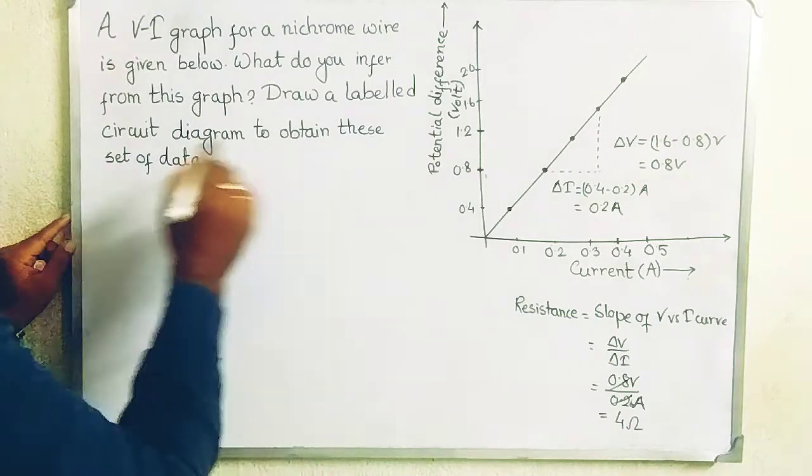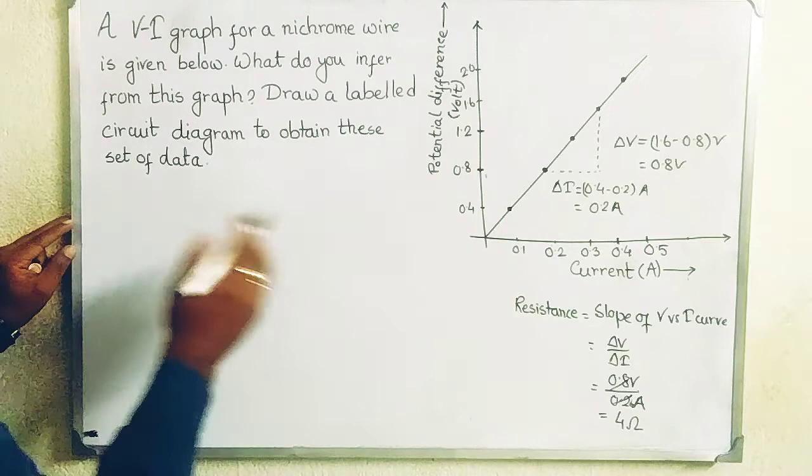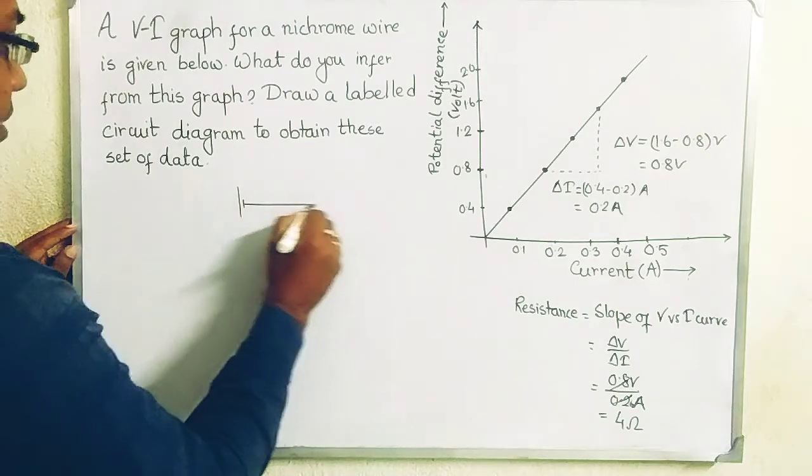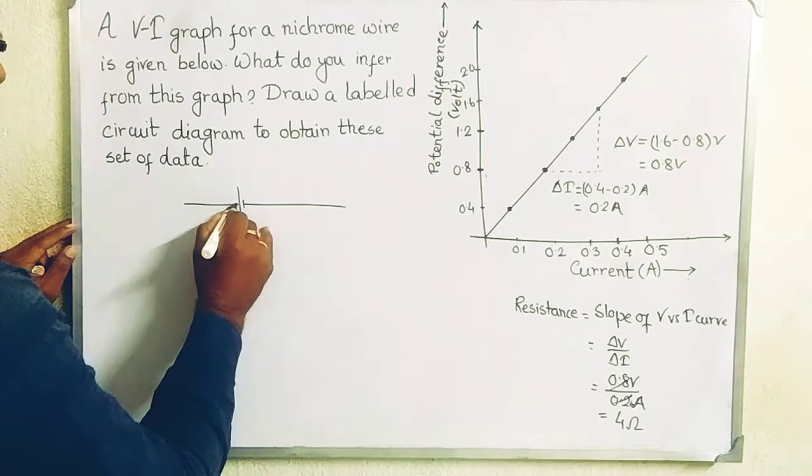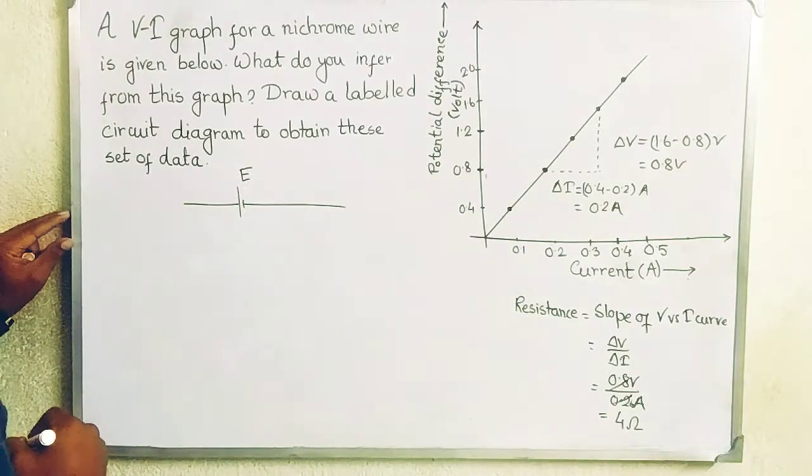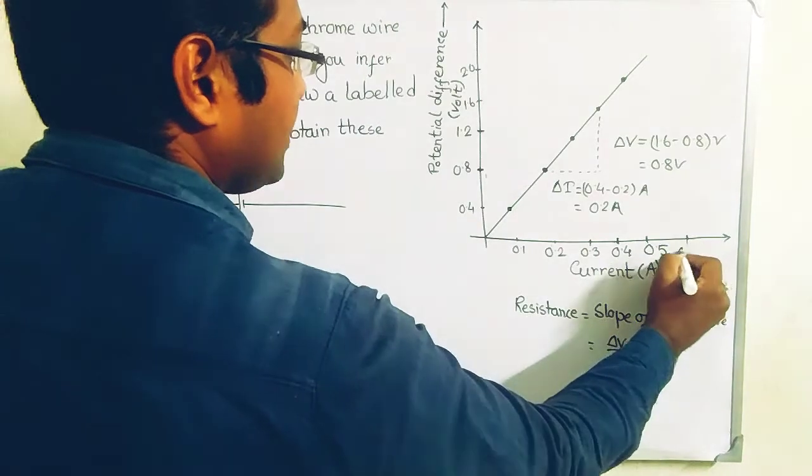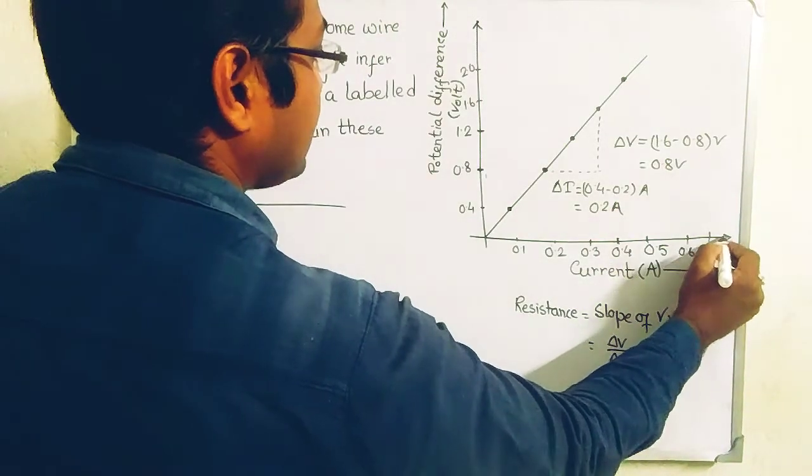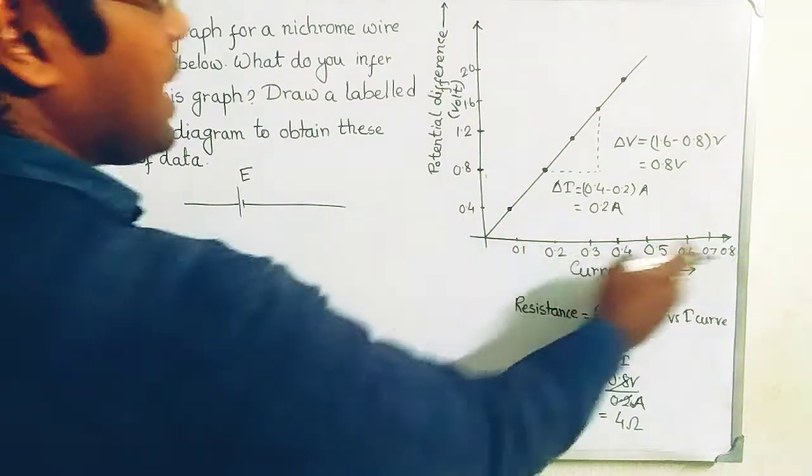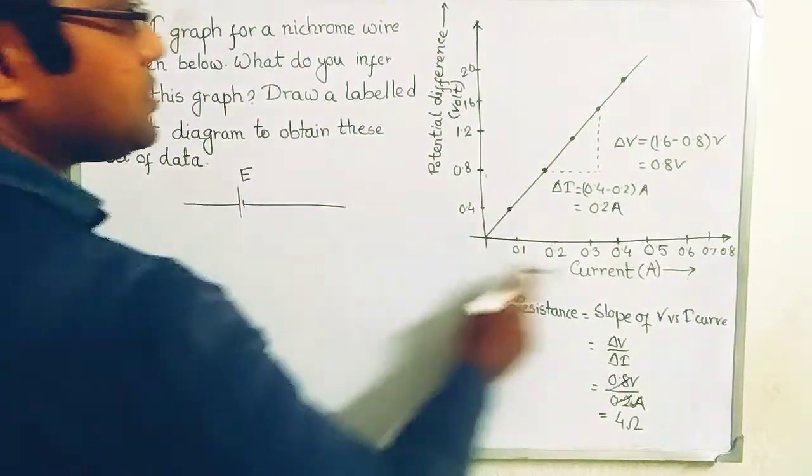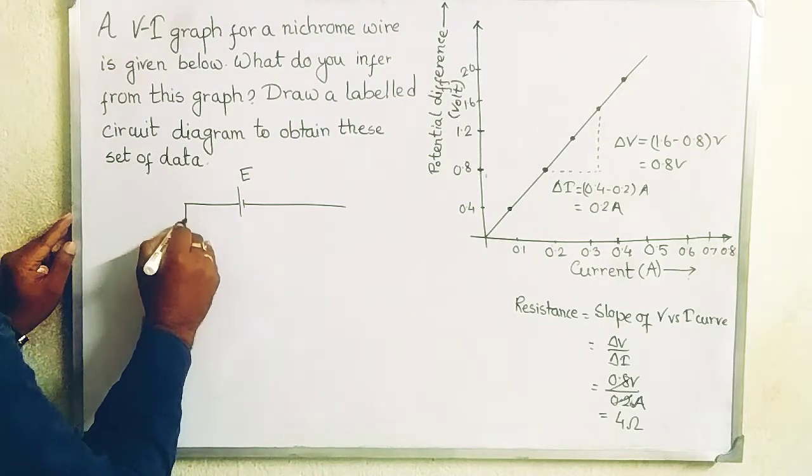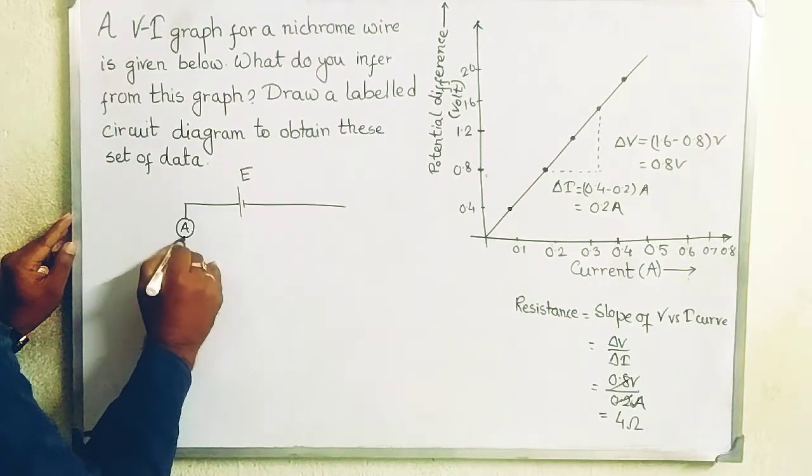We have to draw a circuit diagram to obtain this set of data. What we need? We need the potential difference and the current. So we have to apply a battery or electric cell, let us say it is capital E. The current can be changed from 0.8. Before that we have to calculate the current passing through the resistor. Here it is, this is the resistance.